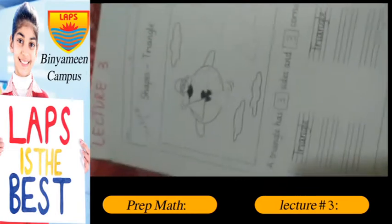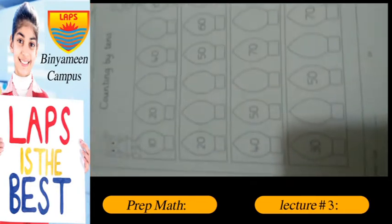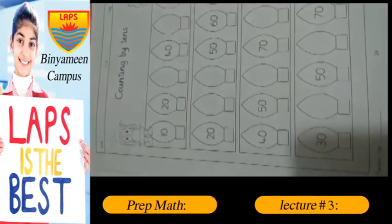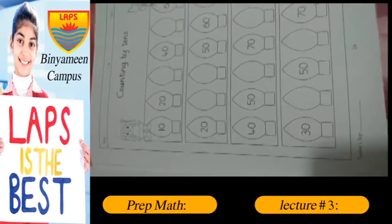Next page - if we come to the next page then we have counting by tens. What is counting by tens? It is that we have to get a gap of 10.